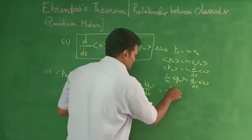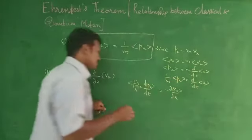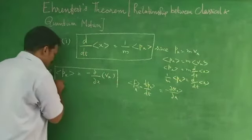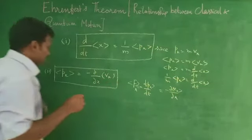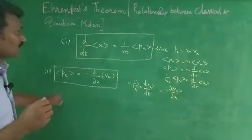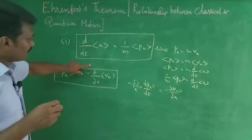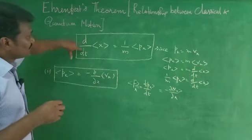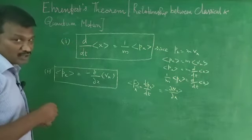So this is the relationship. It is the relationship which gives the connection between classical and quantum motion.